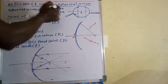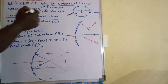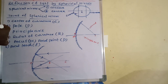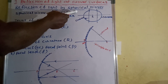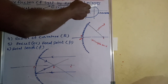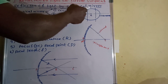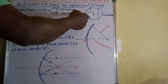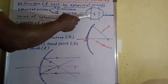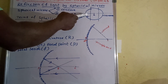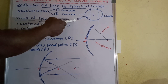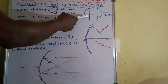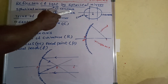What is a concave mirror? Here this is the hollow sphere. We cut the sphere from this point to this point, and we get this portion. This is the reflected portion, and the reflecting surface is the concave part. The reflection that takes place at the concave part — that mirror is called a concave mirror.